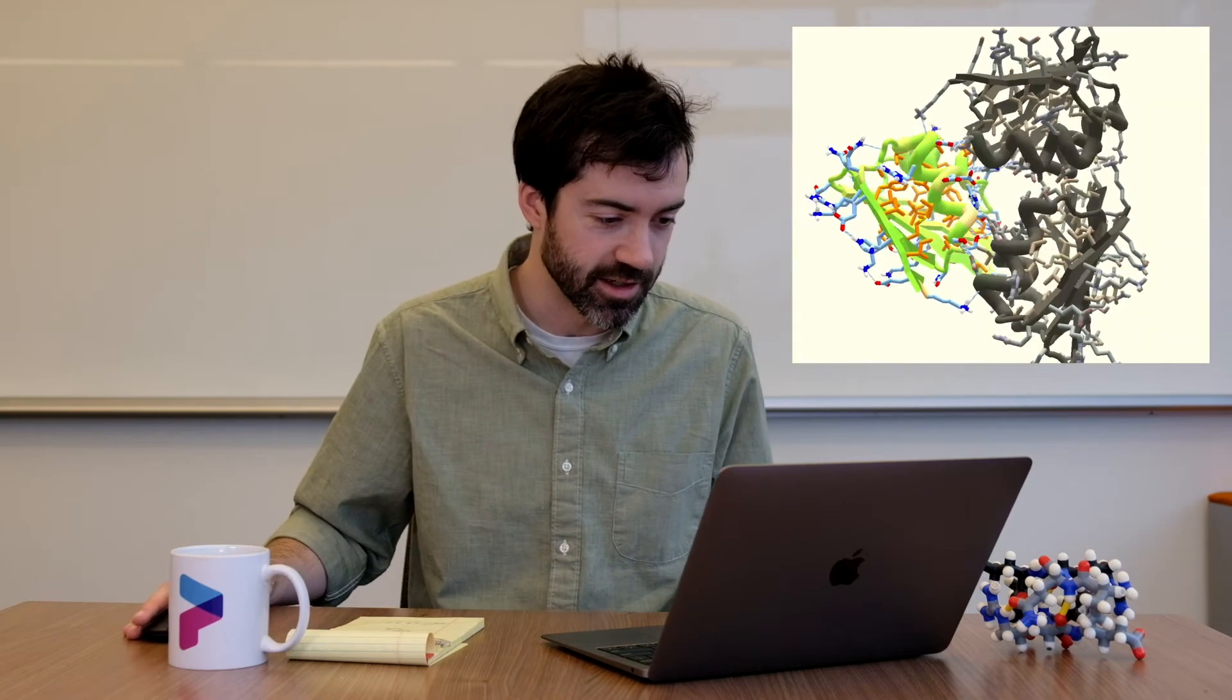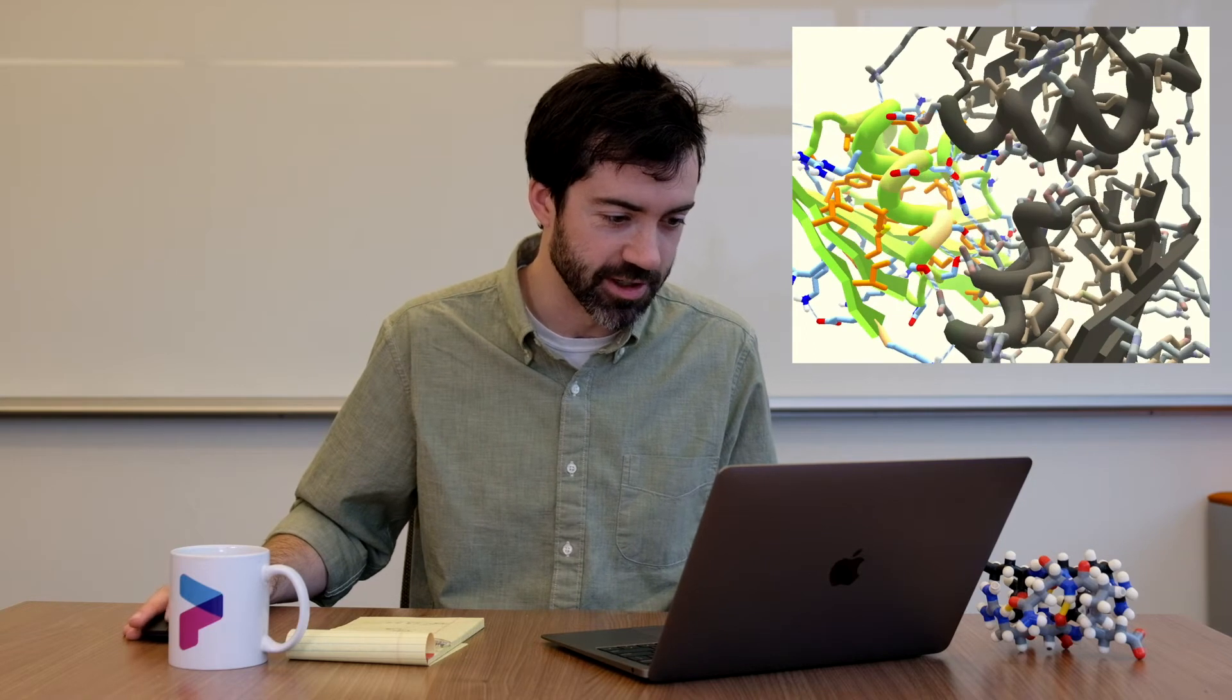This is from puzzle 1764, Symmetric Trimer Design H-Bond Networks. This is a standard trimer design puzzle where Foldit players are challenged to build a symmetric trimer. So this is three copies of the same protein that come together. And Fiendish Ghoul here has designed a brilliant hydrogen bond network that I want to dive into.